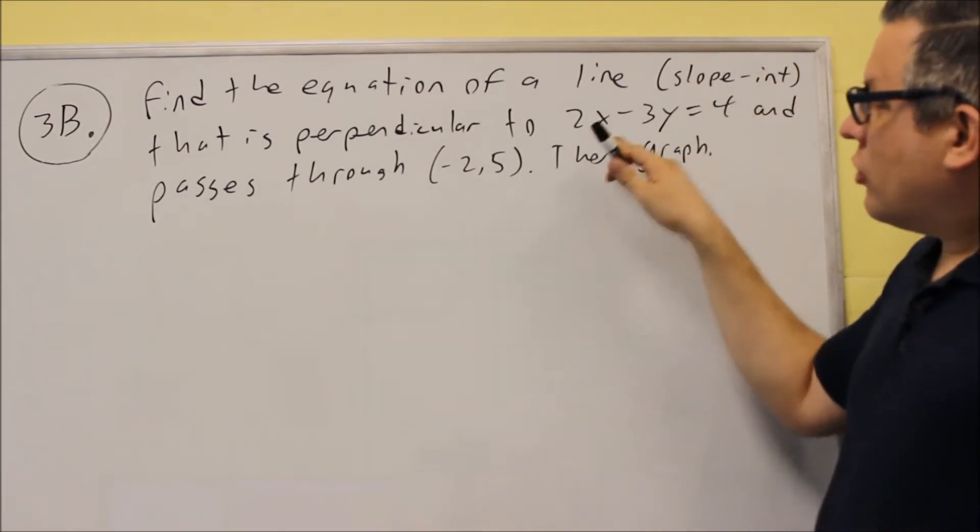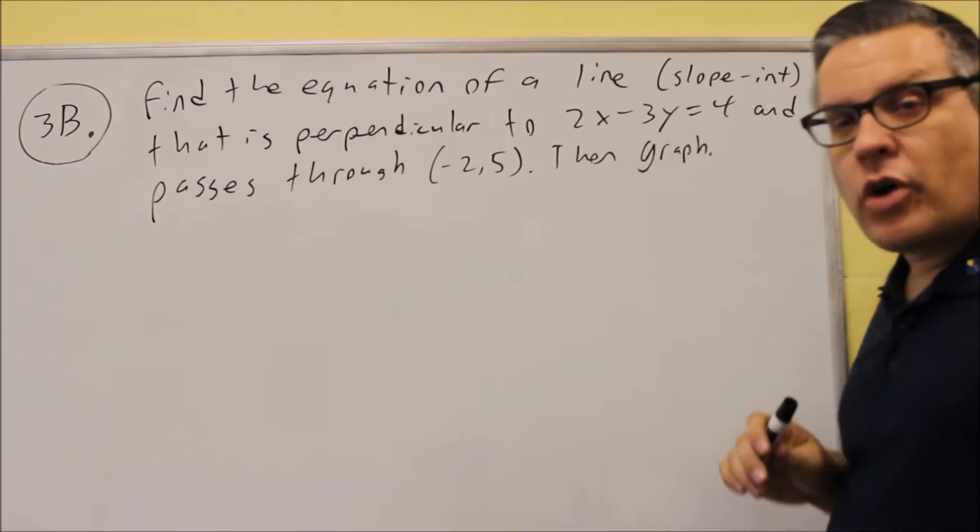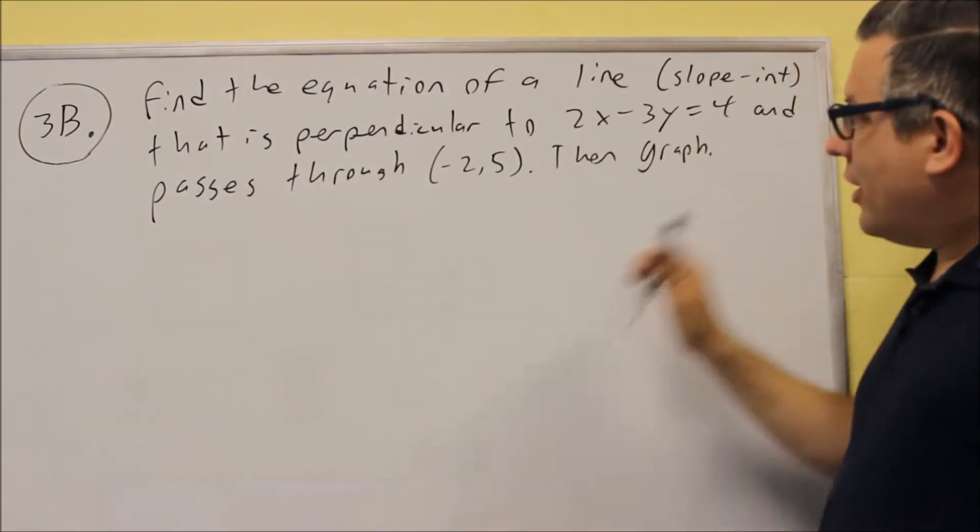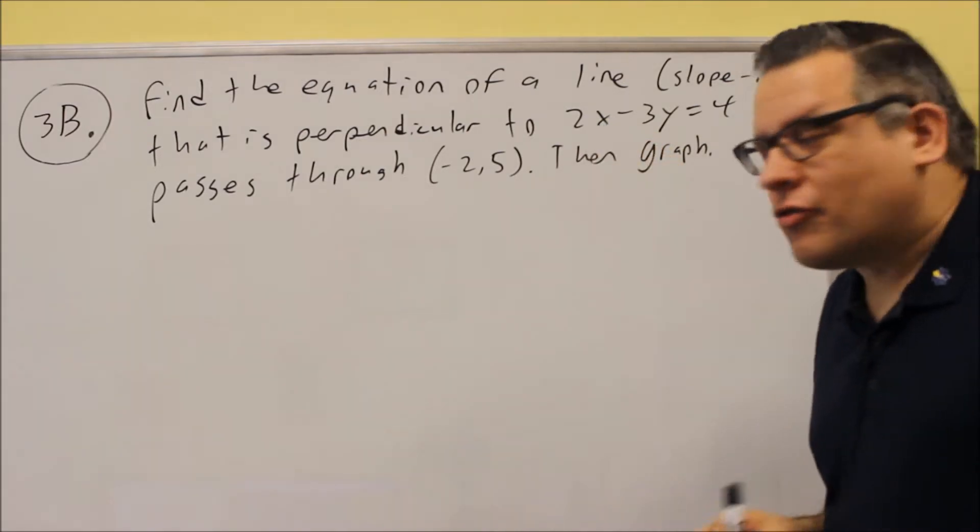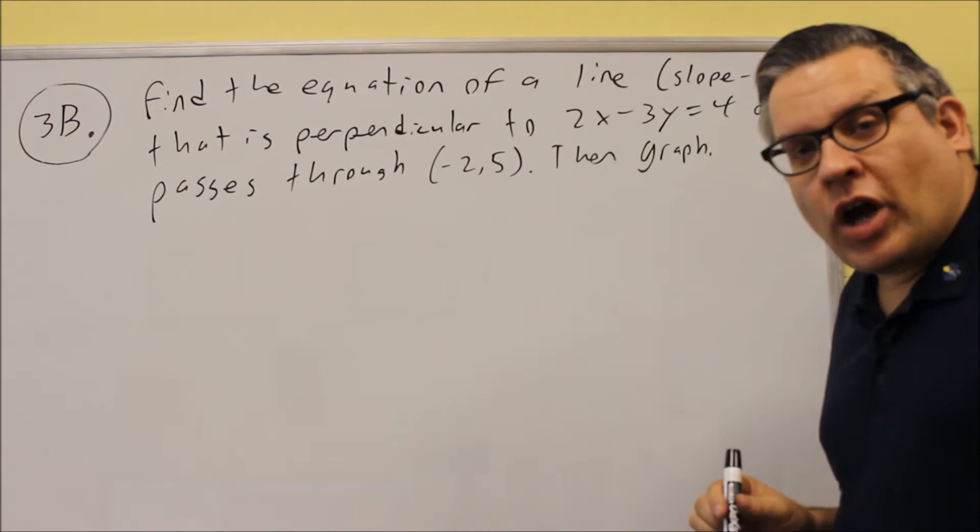For this, we're starting with 2X minus 3Y equals 4, and then we want to find the line that's perpendicular to this one, but it passes through the point negative 2, 5, and then they want us to graph it.